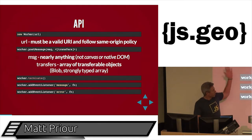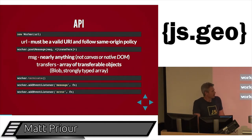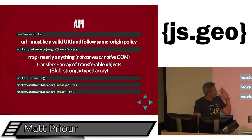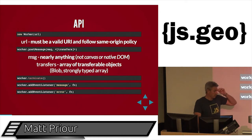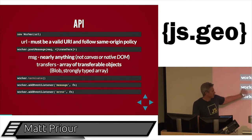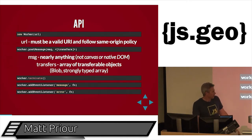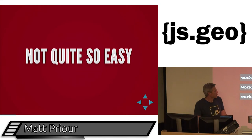The API has a simple postMessage — the message can be pretty much anything, except not native DOM elements or things like the canvas. In most browsers you can do transfers, and those can be blobs or strongly typed arrays — those are the only things they'll transfer over. You can close the worker by terminating it, you can listen for message and listen for error, and that's pretty much it.